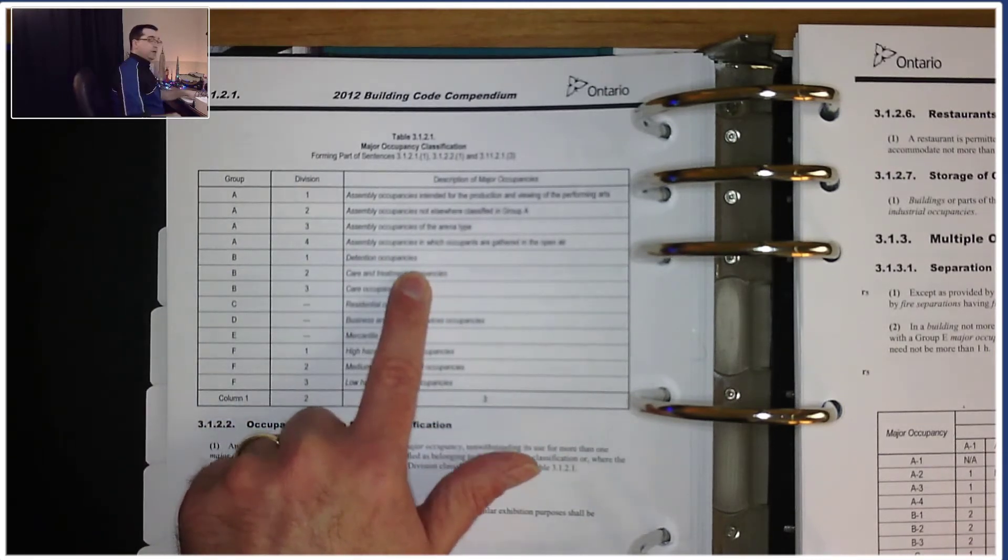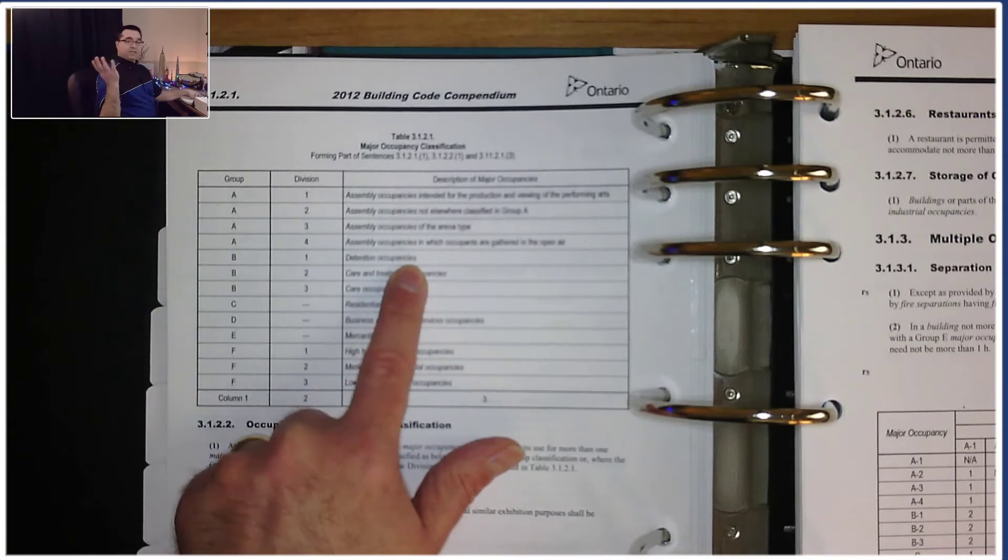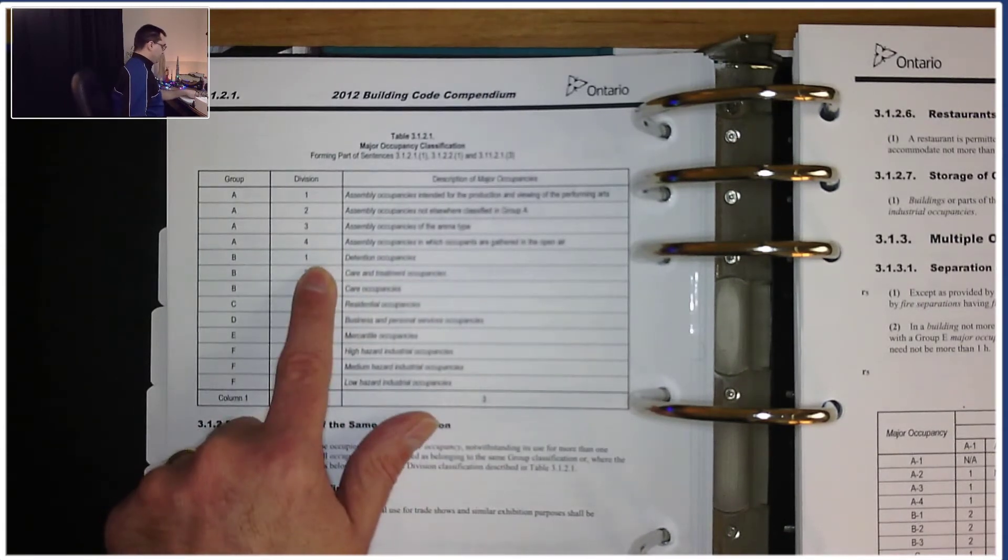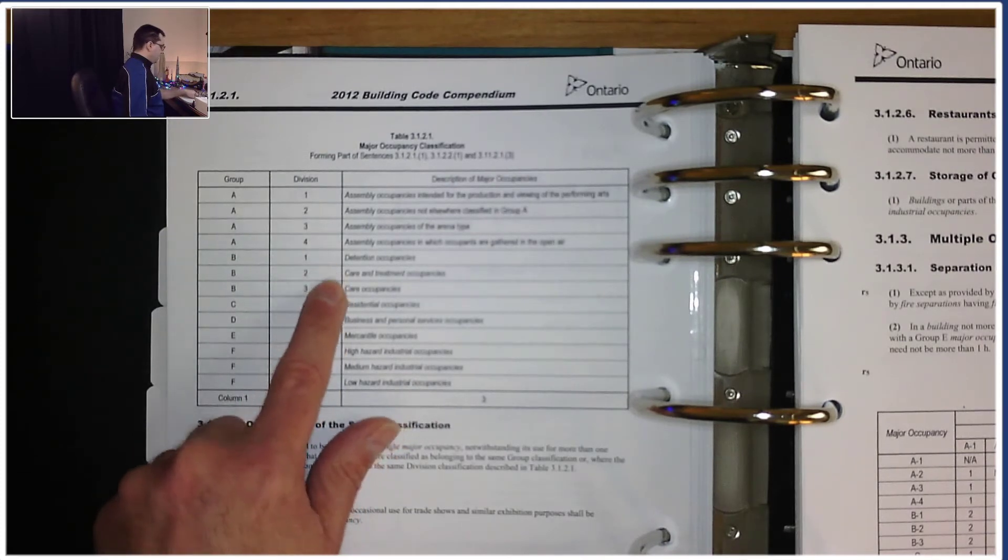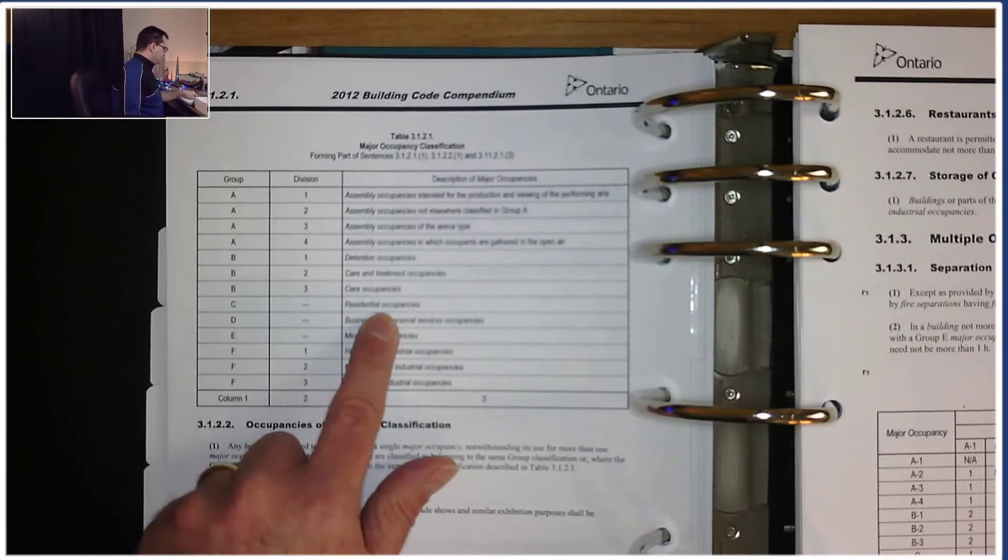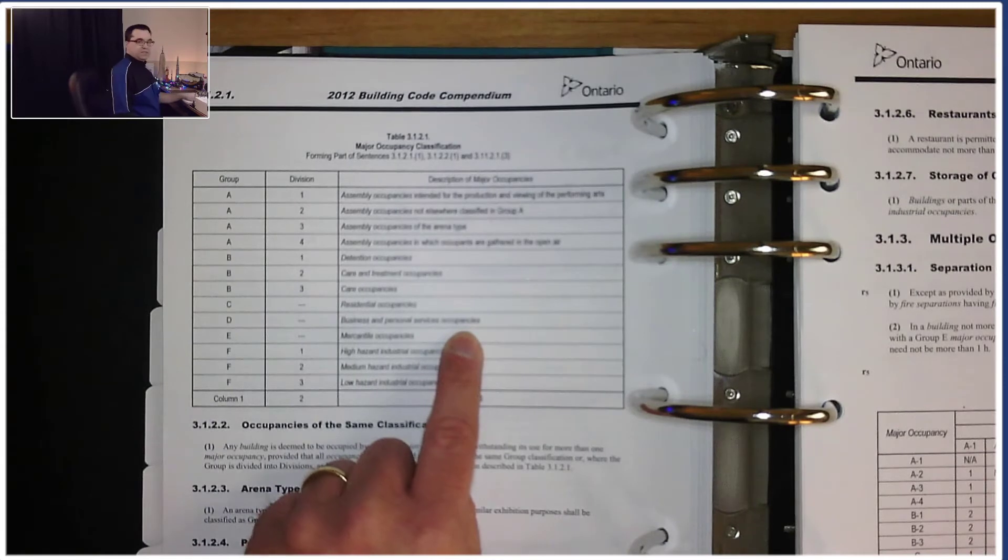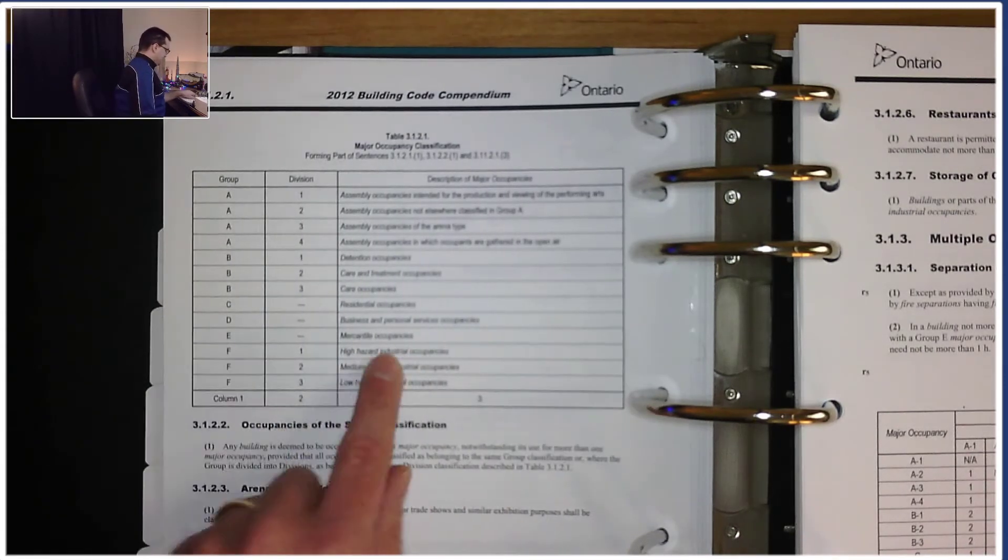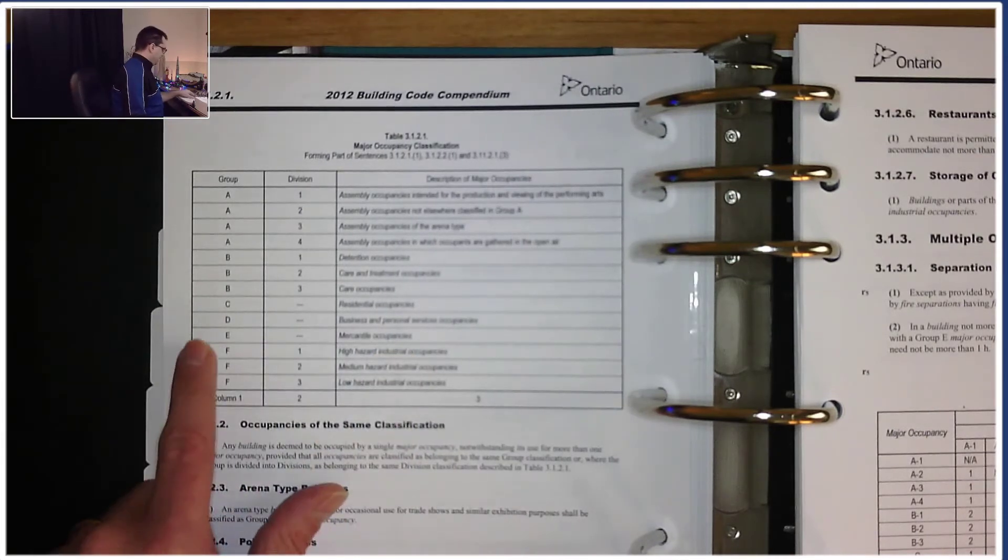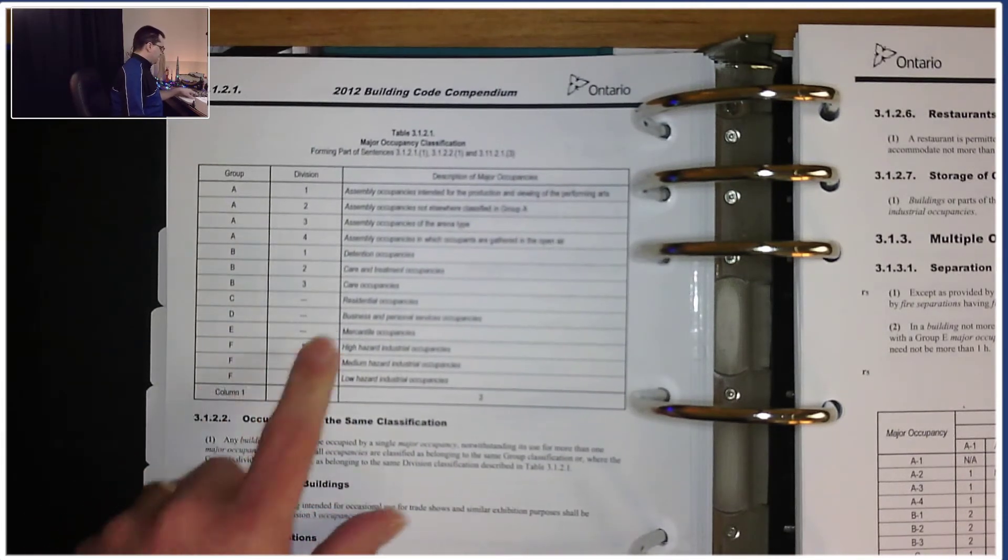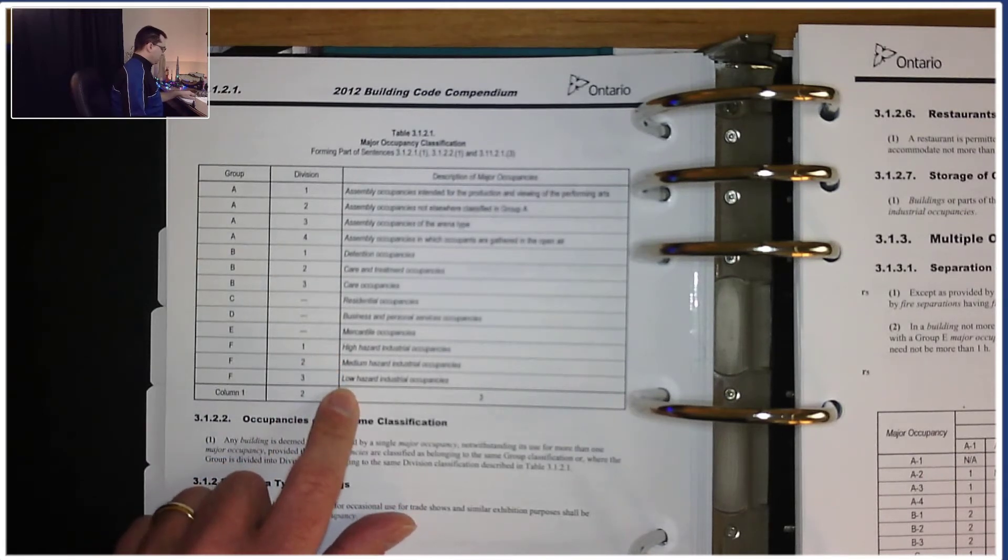Assembly occupancies of the arena type - nope. Assembly occupancies in which occupants are gathering in open air - no. A2 maybe but not likely. We wouldn't classify a police station as an assembly occupancy. Let's move on to B. Detention occupancies - that could possibly be a police station, there are detention spaces. So it might be B1. How about C, residential? No. D, business and personal services? I don't think so. E, mercantile occupancies? Nah. How about any of the industrial ones? High hazard, medium hazard, or low hazard industrial occupancies? No.